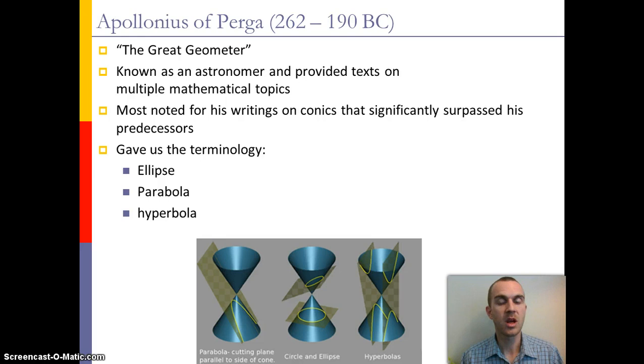A third important Greek mathematician at the time was Apollonius who's considered the great geometer. He was known for much of his work in astronomy and math topics but his biggest thing was the idea of coming up with the conics. It's from him that we get our concepts of the ellipse, the parabola, and the hyperbola.